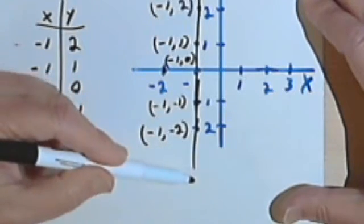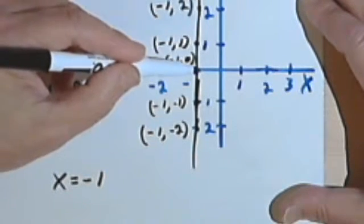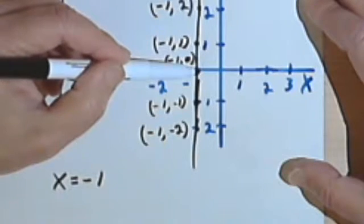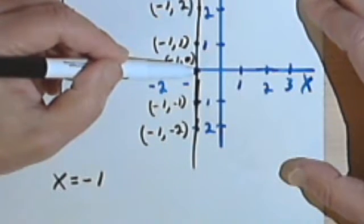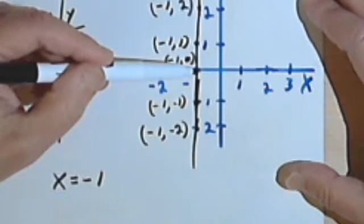If you have a vertical line and you have to write an equation for it, all you do is see where that line goes through the x-axis. Whatever point it goes through, you're going to have x equals that point.